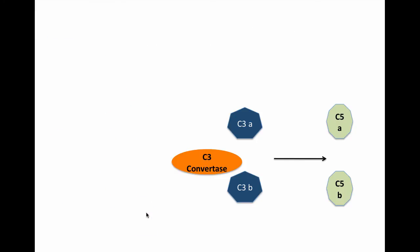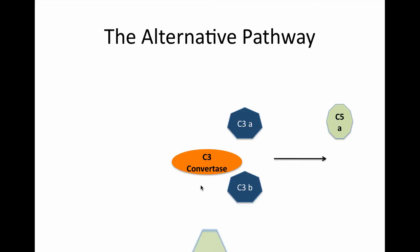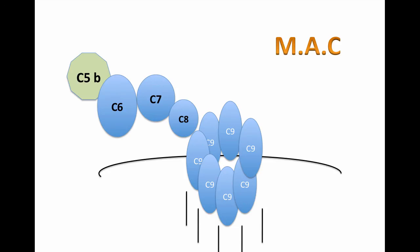The third pathway, the alternative, does not include C2 nor C4. It starts directly with C3 convertase, which is the common pathway in all. This later activates C5b and follows the membrane attack complex.